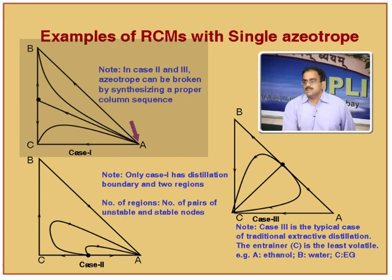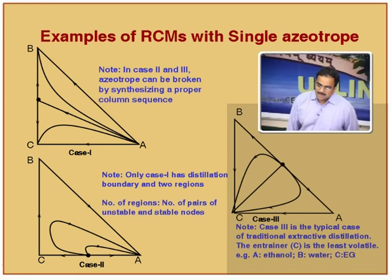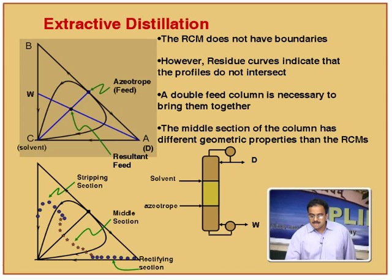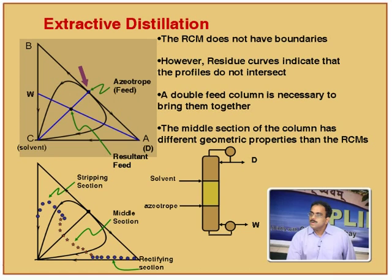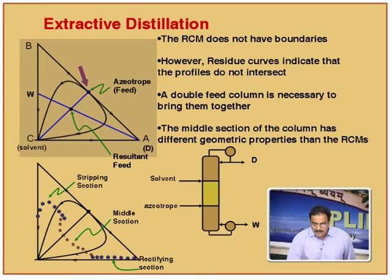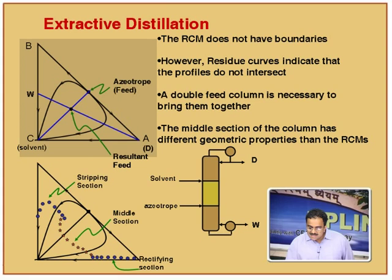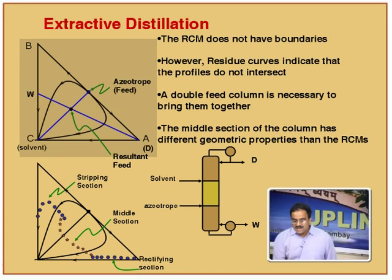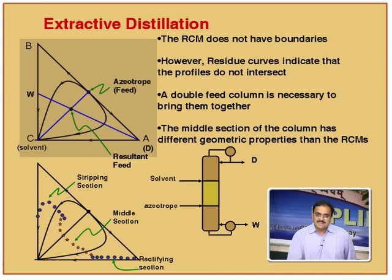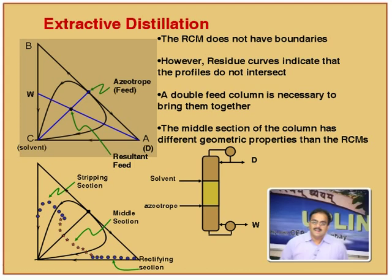This case is a very typical case. Now we are going to learn this. In this case, you have this as azeotropic composition — this is going to be your feed — and the question is: can I use C to break this azeotrope? I can follow the same method and see whether I can get A and B in pure form. Now, look at this RCM. A — is it a stable node, unstable node, or saddle? Saddle. B — stable node, unstable node, or saddle?